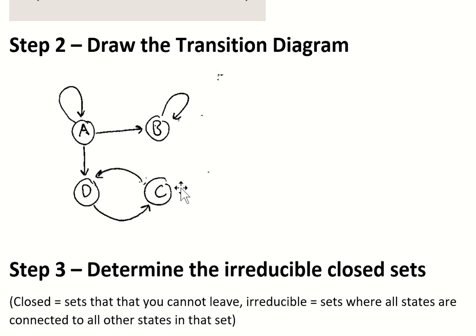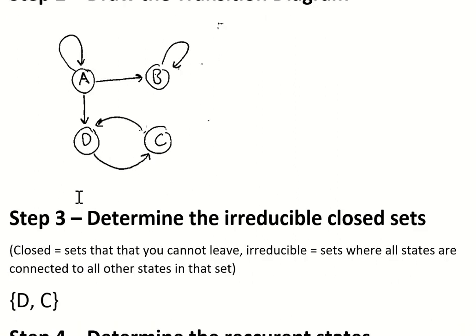You need to find the sets that are both irreducible and closed. In this example, the set D and C is the only example of that, so DC is noted.